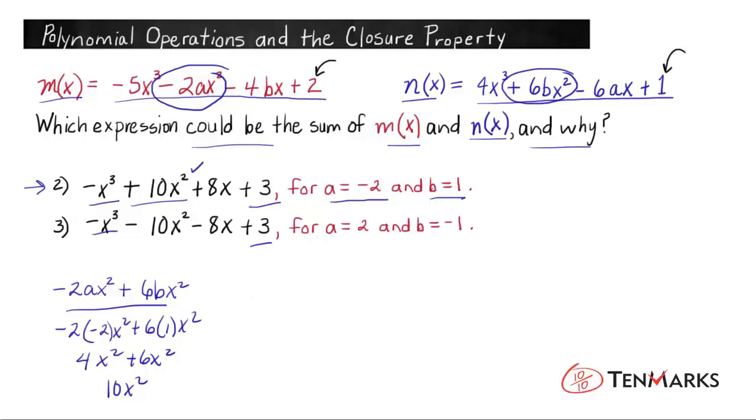What we need to check now is the +8x. Let's do that here. Let's grab the linear terms of m(x) and n(x) and put them together. That's going to be -4bx, and then over here we have -6ax, so it'll be plus -6ax. If we write that without double signs, that'll give us -4bx - 6ax. And then let's evaluate for a = -2 and b = 1.